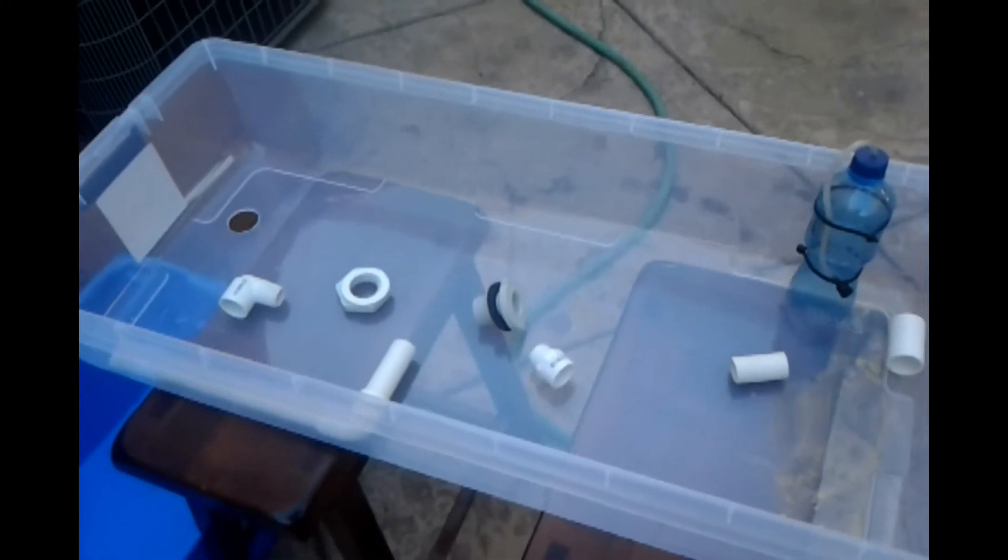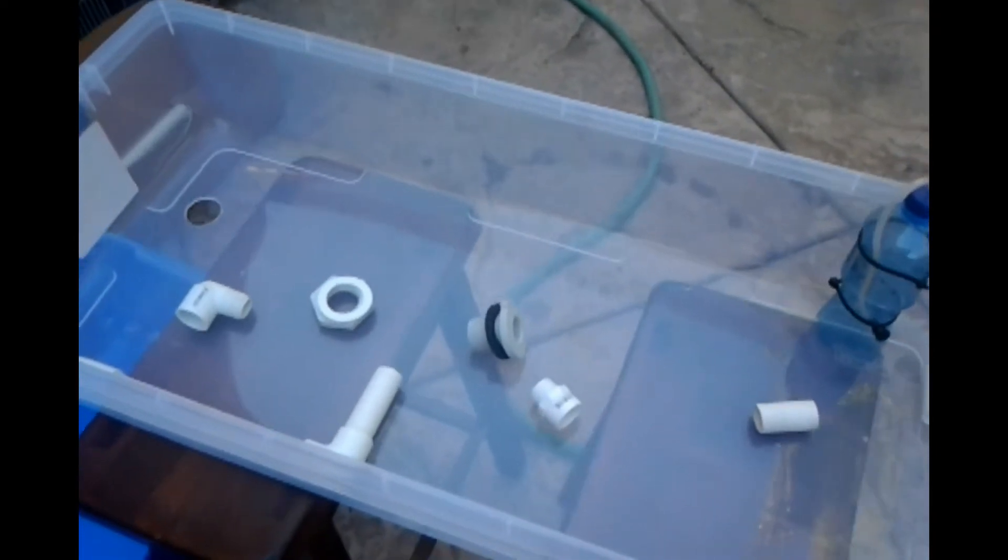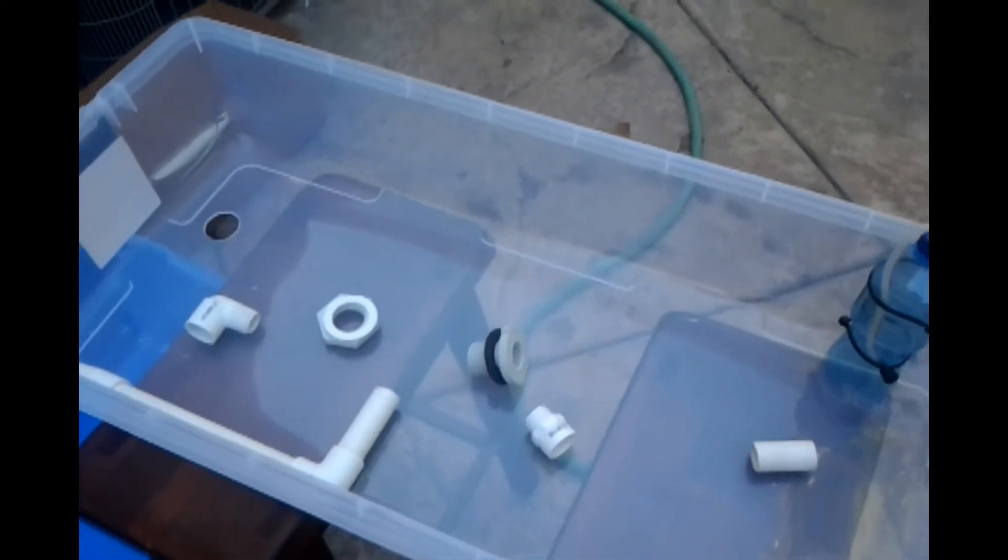Sup guys, this is a video on how to make a bell siphon and a grow bed for your aquaponic system. It's very simple, just go ahead and go get the materials from Home Depot.